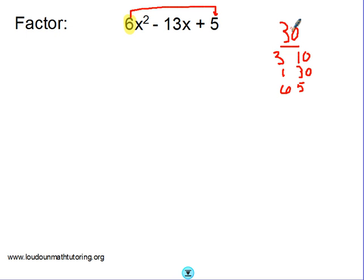Now notice that to get a positive 30 that adds to negative 13, both of the factors would have to be negative. So let's look at negative 3 and negative 10. You multiply those together, you get positive 30. You add those together, you get negative 13. So here's our factor pair.